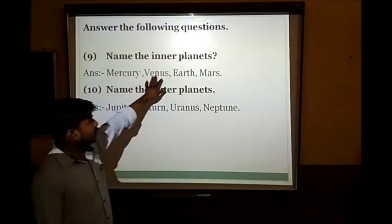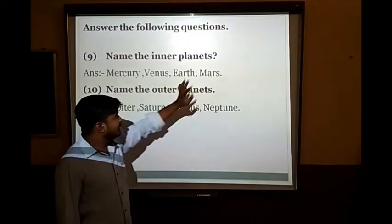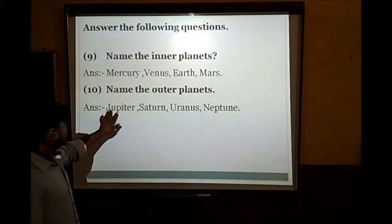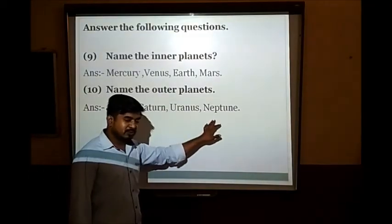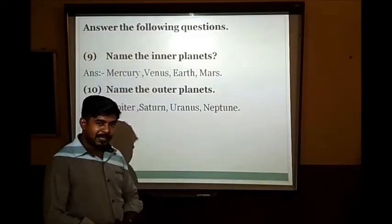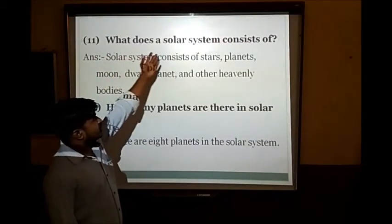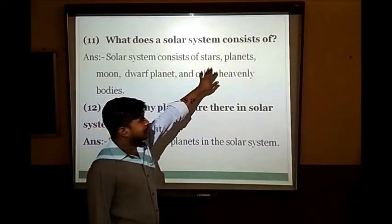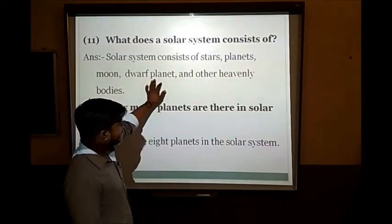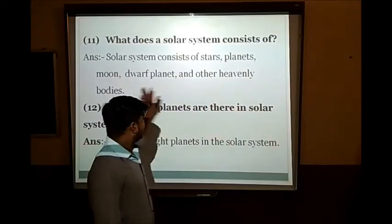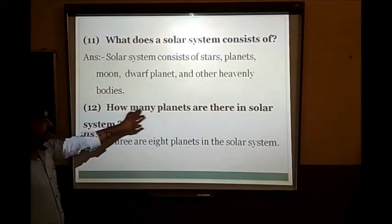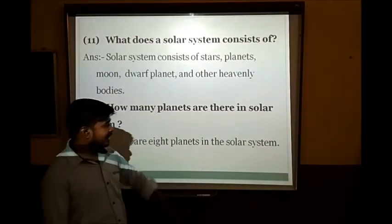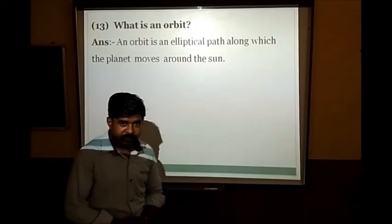Name the inner planets: Mercury, Venus, Earth, and Mars are inner planets. Name the outer planets: Jupiter, Saturn, Uranus, and Neptune are outer planets. What does the solar system consist of? The solar system consists of stars, planets, moon, dwarf planets and other heavenly bodies. There are 8 planets in the solar system. Thank you, students.